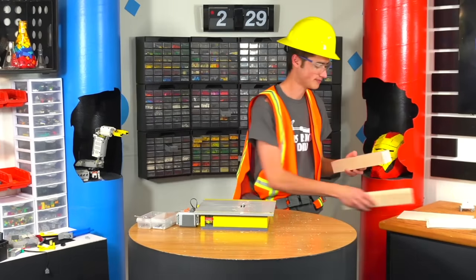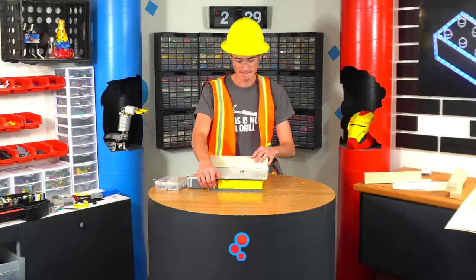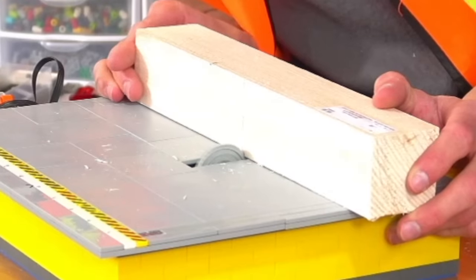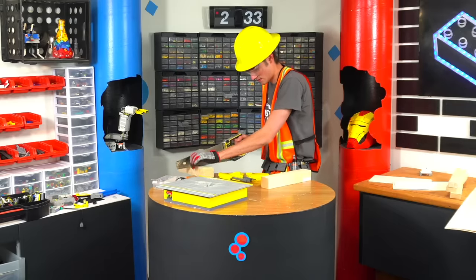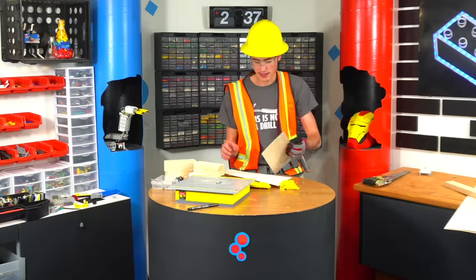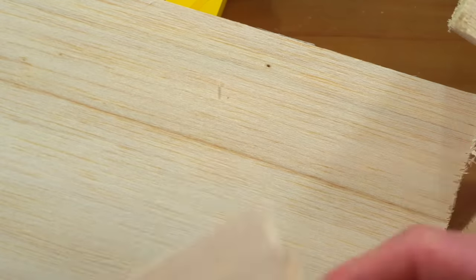All right, so now we have all our wood pieces cut. As you can see, there's a lot of burrs and it just needs to be sanded. So the next power tool we're going to build is an automatic sander.